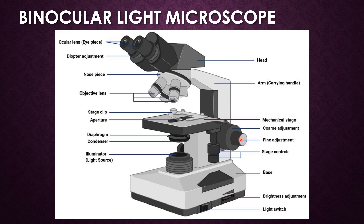Next is the ocular lens, also called the eyepiece. The ocular lens is available with different magnification powers and is a lens located on the top of the body tube of the microscope. It has a magnification of 10x or 15x in normal vision.